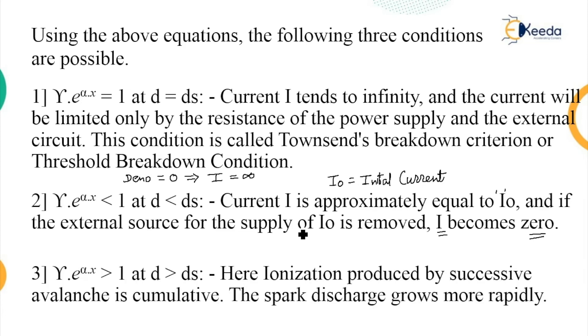Third condition: when this gamma e to the power alpha X or alpha D is greater than 1 at D is greater than Ds, that is when D is greater than sparking distance, the ionization produced by the successive avalanche is cumulative and the spark discharge grows more rapidly. So the discharge occurs between the contacts of the electrodes more rapidly and therefore we call this what the criteria for the breakdown.